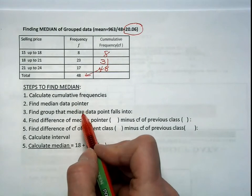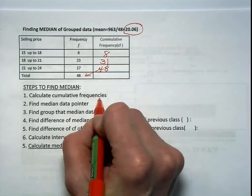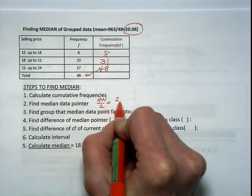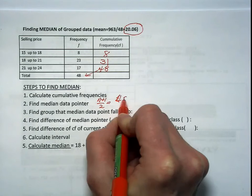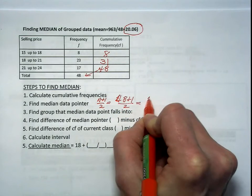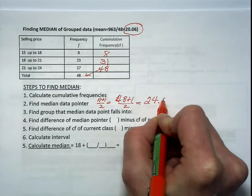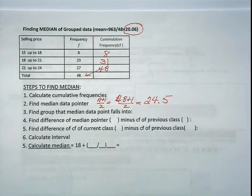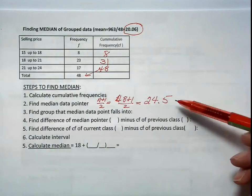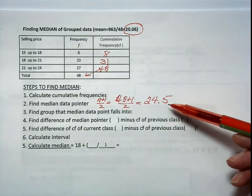Find the median data pointer. Again, that formula is n plus 1 divided by 2. 48 plus 1 divided by 2, or a median data pointer is 24.5. What does that mean? Our 24.5 data point is our median. Where does that fall? That's the locator point, remember. That's not our median.